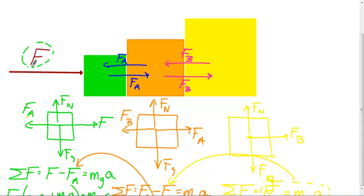This acceleration is the same for all boxes, but because they have different masses — assuming the same density, so the yellow is most massive, then orange, then green — the forces between them are not equal. Force F_B is not the same as F_A, because they have different masses being acted on with the same acceleration.